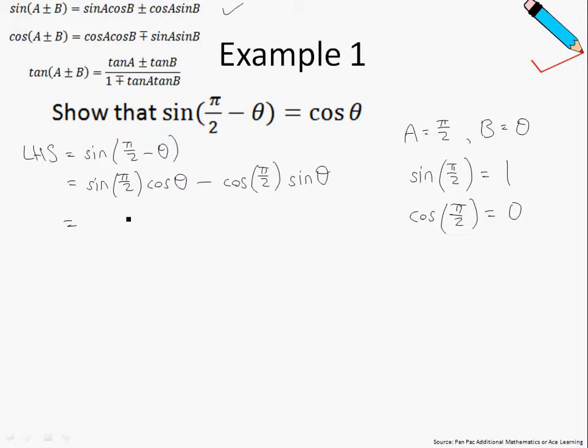So if I replace them, sine of π/2 is just 1, and cosine of π/2 is just 0. So if I were to simplify this, I'll just arrive at cosine of θ, shown.